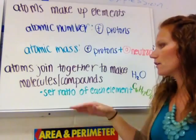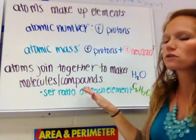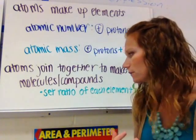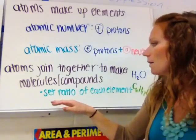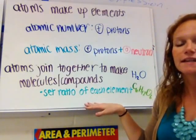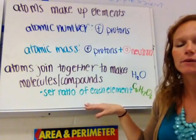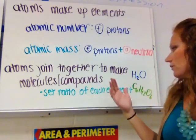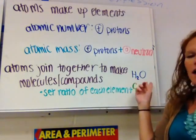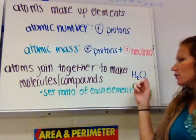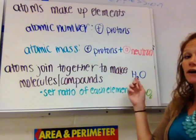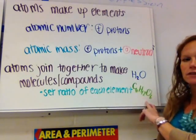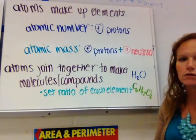These atoms join together to make up molecules or compounds — you'll see both words. A molecule or a compound is a set ratio of a number of atoms of each element. For example, dihydrogen monoxide, or H2O, is water. Or you have C6H12O6, which is glucose, sugar.